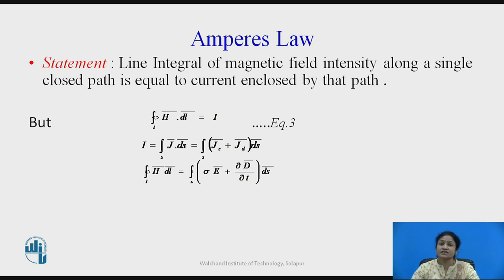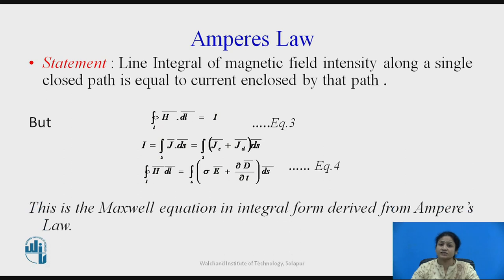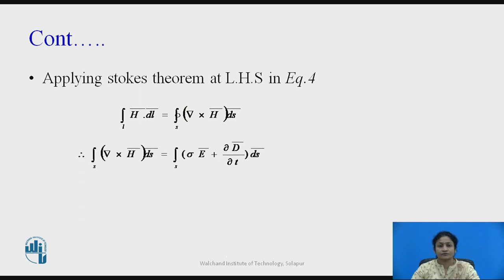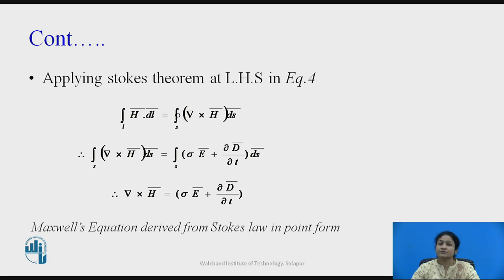The current due to resistance is given by σE-bar and the current in a capacitor is given by ∂D/∂t. When we substitute the values of J_c and J_d, we get equation 4, which is Maxwell's equation in integral form derived from Ampere's law. Applying Stokes' theorem to equation 4, the integral H·dl is replaced by del cross H-bar over the surface, reducing to: del cross H-bar equals σE-bar plus ∂D/∂t, which is Maxwell's equation derived from Stokes' theorem in point form.